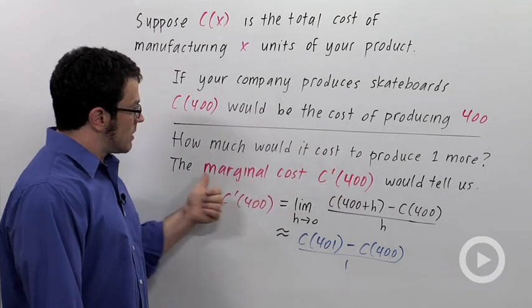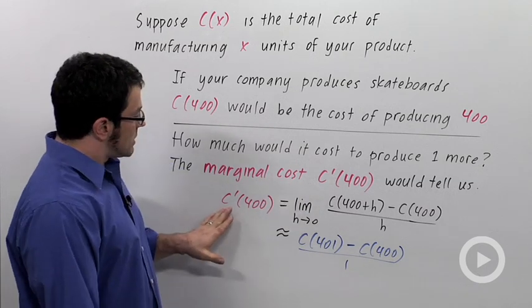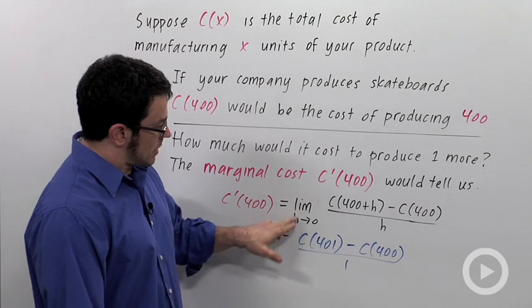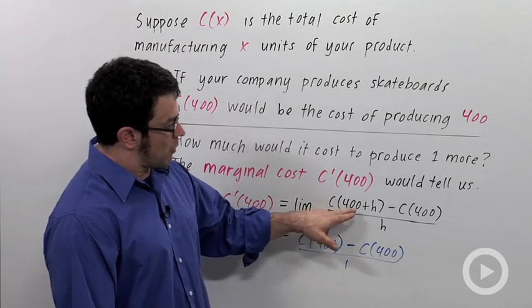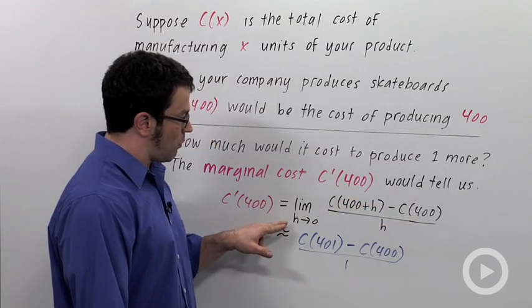So in economics, the derivative of the cost is called the marginal cost. C prime of 400 is defined as the limit as h approaches 0 of C of 400 plus h minus C of 400 over h. This is just the definition of the derivative as we've seen before.